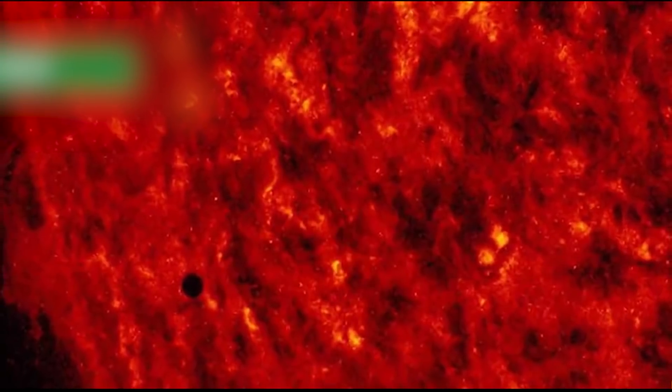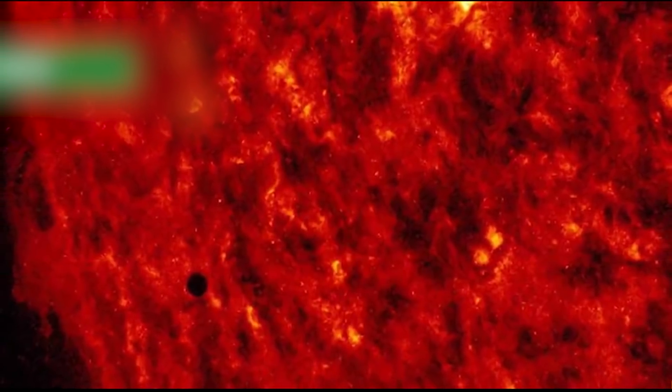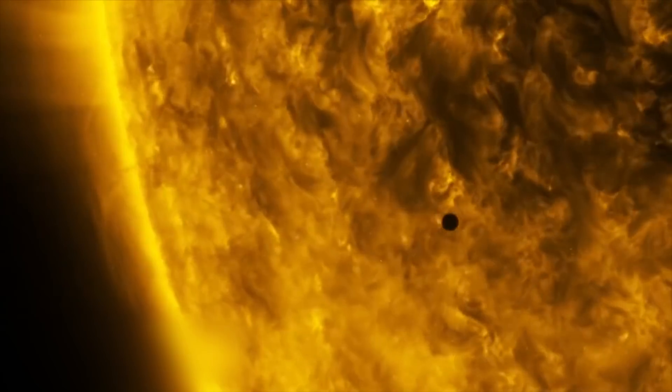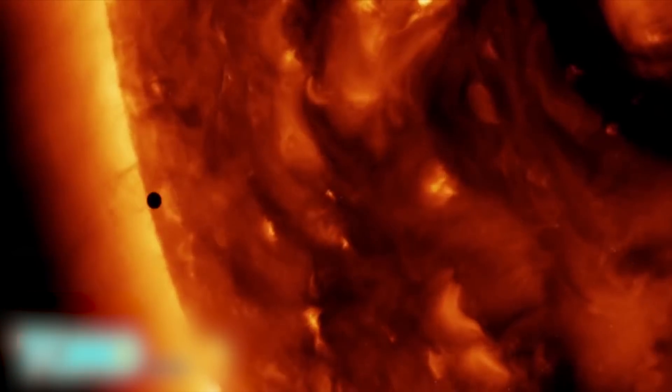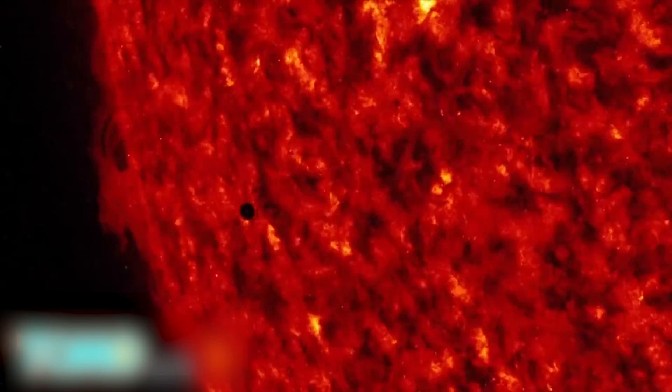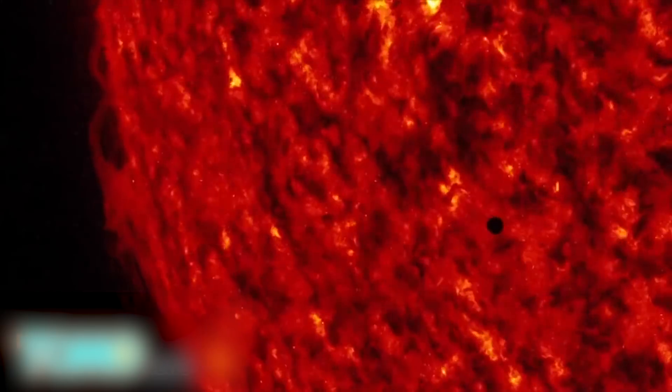NASA releases stunning video of Mercury passing over the sun. On May 9th, NASA filmed footage of Mercury passing between Earth and the sun. The rare event, called a transit, only happens slightly more than once a decade. The transit isn't normally visible from Earth, as the three celestial bodies rarely align.